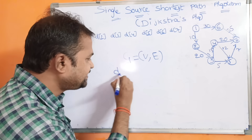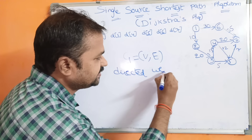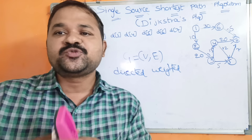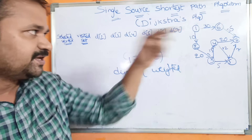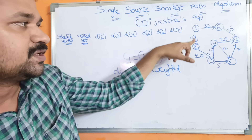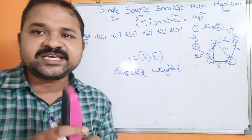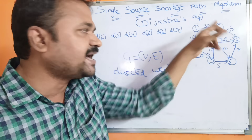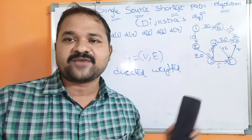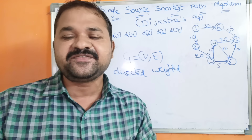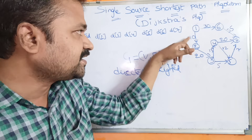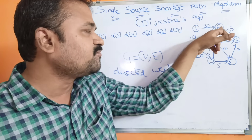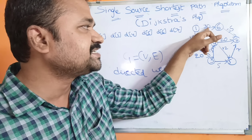Let the graph be a directed weighted graph. Directed graph means there should be some directions from source to destination. If you observe here, there should be a direction from 1 to 2, and every edge is associated with some direction — some arrows. From 1 to 6, we have an edge with some direction. Weighted graph means the corresponding edge is associated with a weight or cost. From 1 to 2, the weight is 10, and from 1 to 6, the cost is 30.